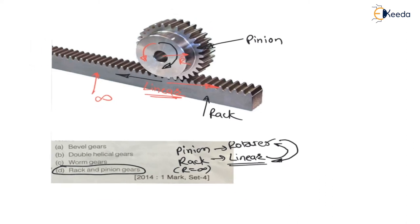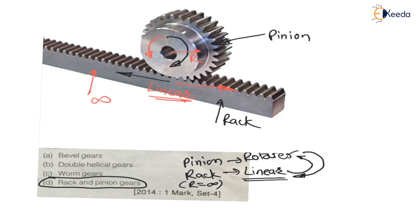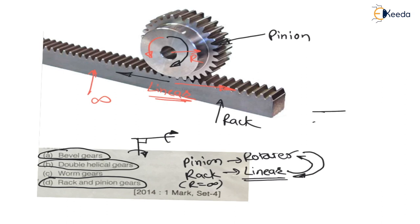In case of a bevel gear, power is transferred at 90 degrees, but here also rotation is converted into rotation only — rotational motion into rotational motion. In case of double helical gear, again there are two parallel shafts and rotational motion is transferred into rotational motion only. In case of worm gear, again there are two non-parallel, non-intersecting shafts and rotational motion is transferred into rotational motion only.